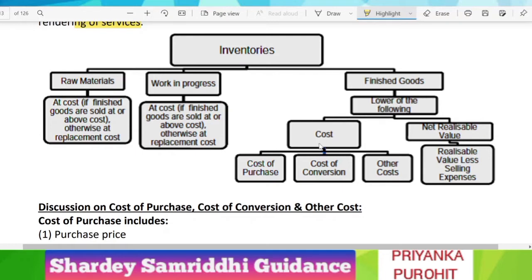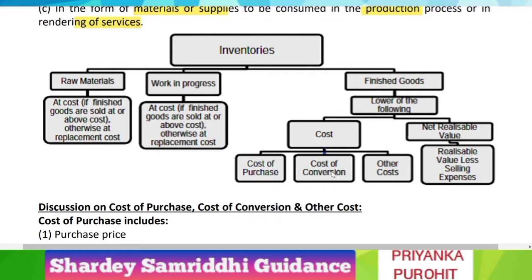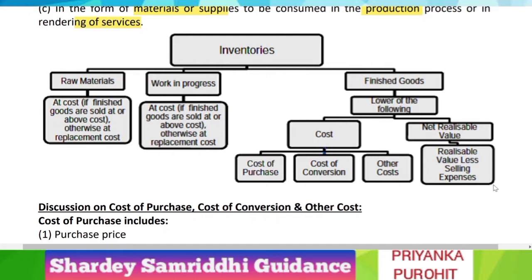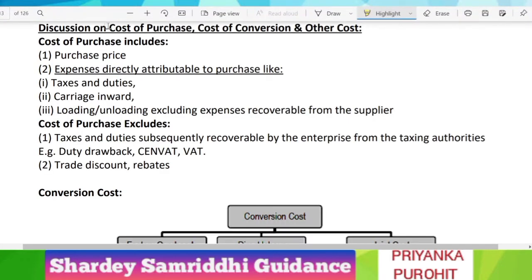So here, what is included in cost? Cost comprises the cost of purchase of that particular item, plus cost of conversion, plus any other cost. All three together make the cost. And what is net realizable value? Net realizable value is the realizable value less any selling expenses. You will be able to understand it better when we solve the questions.